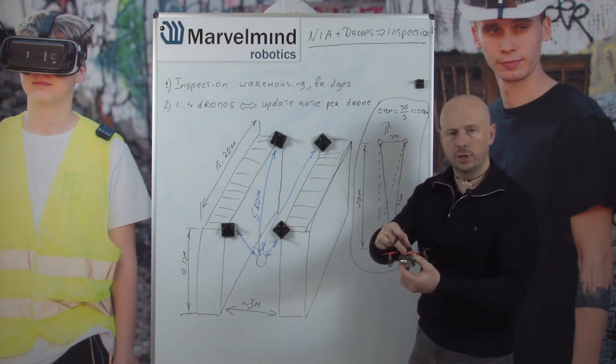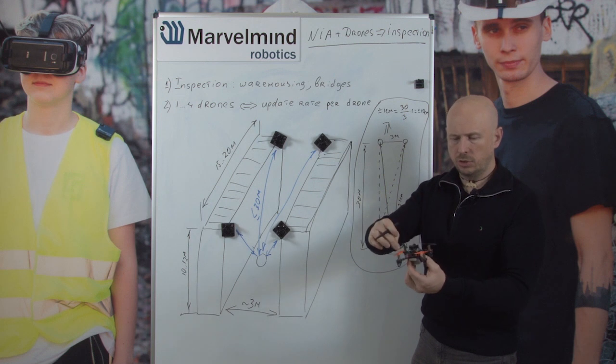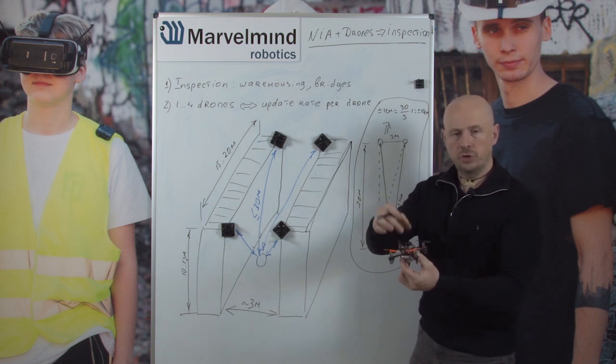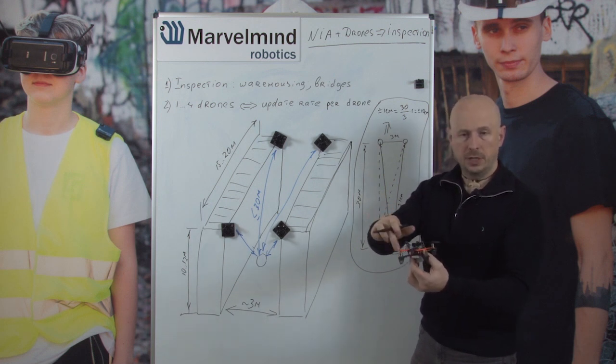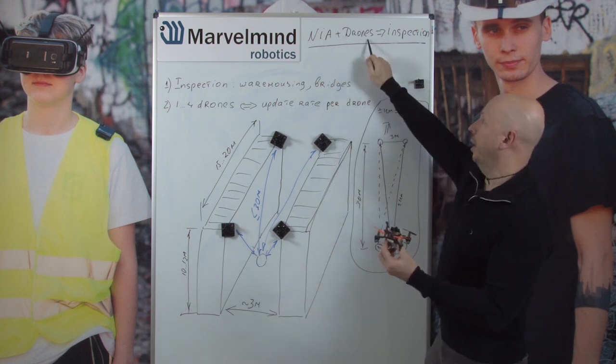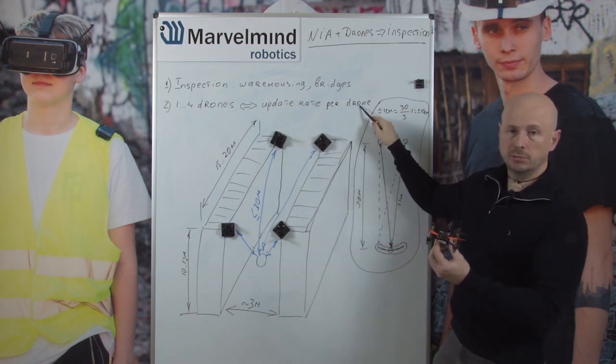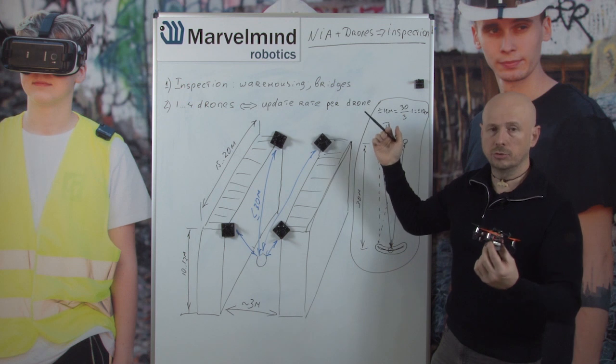If you install the receiving beacon on the drone, most probably the range will be very limited because it will be saturated by the noise of the propellers. So we are discussing non-inverse architecture and one to four drones mainly because of the update rate. If update rate is not a problem you can fly 100 drones.